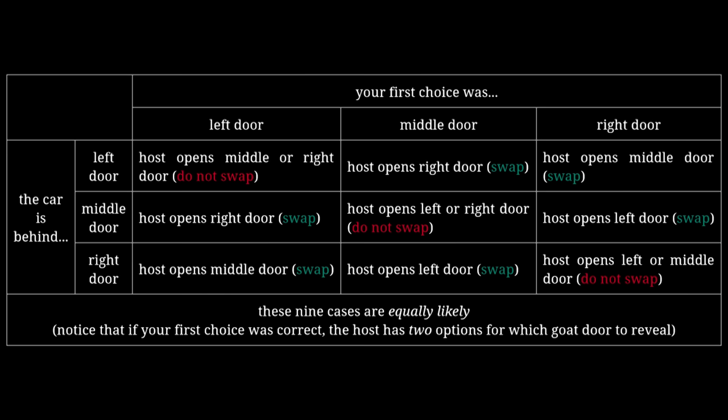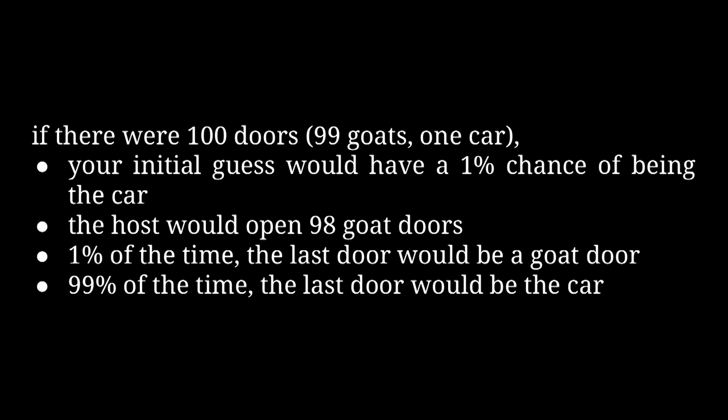This makes more sense when you think about what happens with far more doors. Say there are 100 doors, one car, and 99 goats. You make a choice, then the host opens 98 doors revealing 98 goats. One percent of the time you picked the car first, and the remaining door is a goat. But in the other 99 percent of cases, your first choice was a goat, the host opens every other goat door, and the one final door has the prize. In other words, the probability of getting the car when you switch equals the probability of your first guess randomly being incorrect.